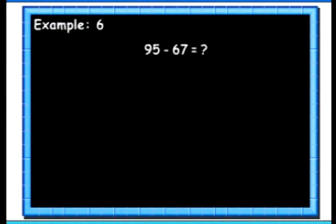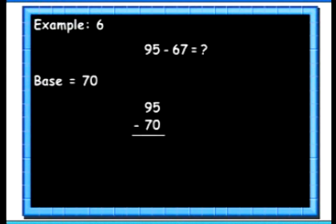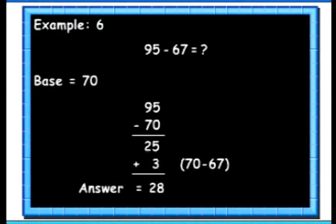Let's see another example. Here we want to subtract 67 from 95. Here we will take the base as 70. Instead of subtracting 67 from 95, we will subtract 70. We get 25. Then we will add 70's complement of 67, which is 3, to the result. So we get the answer as 28.